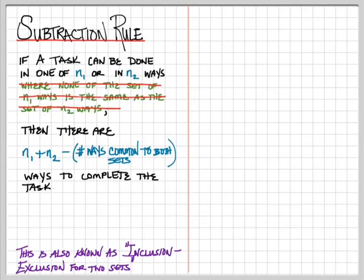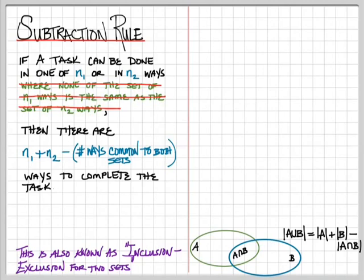So this is also known as inclusion-exclusion on two sets. It can be generalized to as many sets as you want. And you may have seen it back in your chapter on set theory when you were looking at the size of the union of two sets because when you look at the size of the union of two sets, you take the size of the first set, you add it to the size of the second set, and then you have to subtract off the size of the intersection.